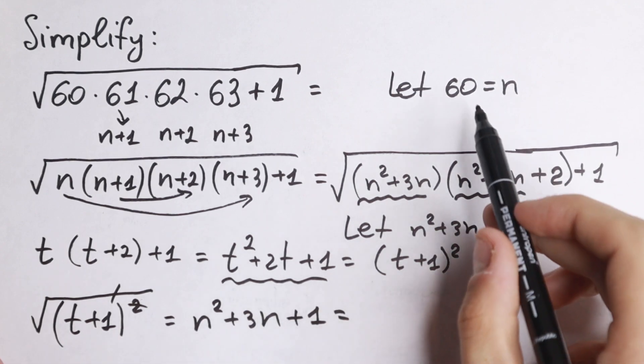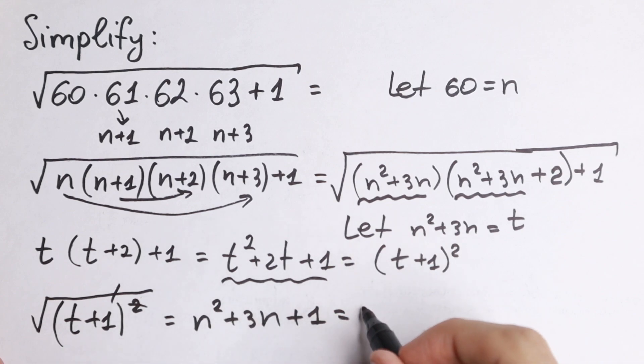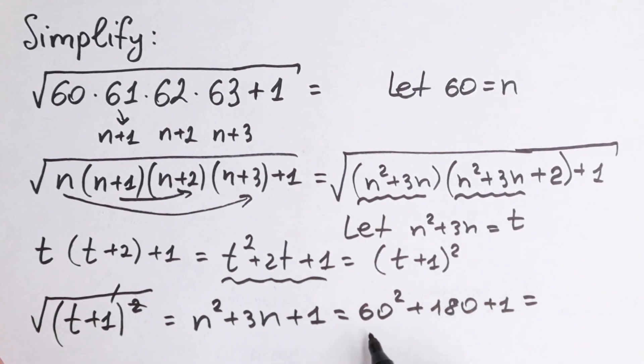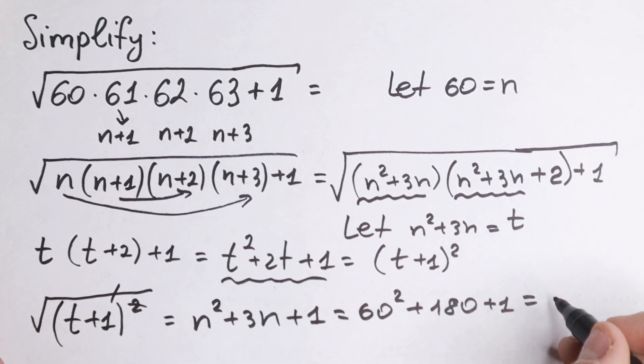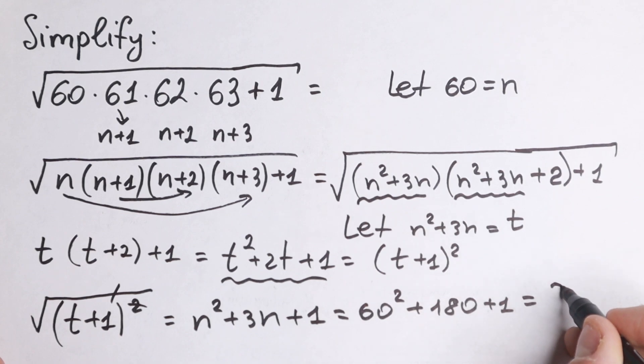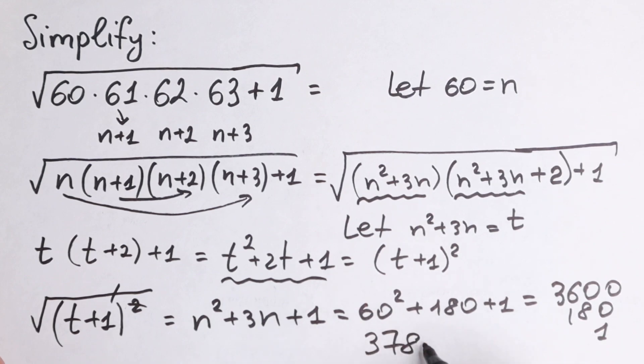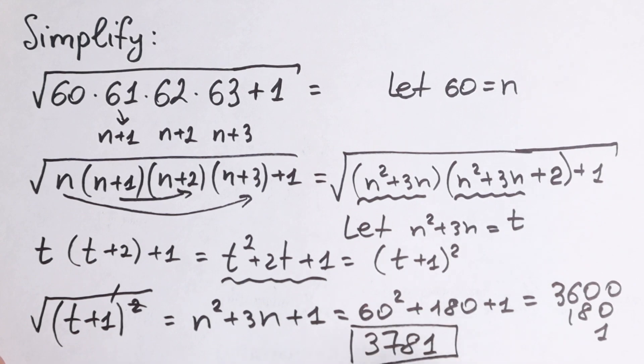Let's plug in 60 right here. 60 square plus 3 times 60 plus 1. 60 square is 3600 plus 180 plus 1. If we add all of these, we have 3781. So our final answer will be 3781. This is our answer.